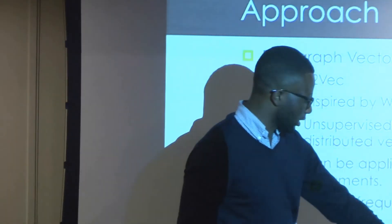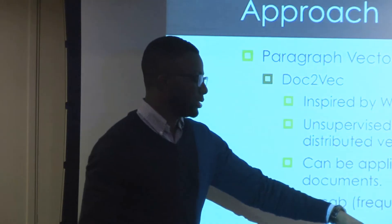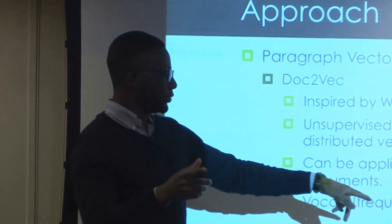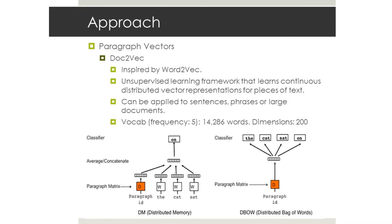The next one is distributed bag of words, which is more similar to the skip-gram model for Word2Vec. What you do is take your paragraph ID, initialize a random vector, then sample random sets of words and try to predict one word in that sample. It's effectively the exact reverse of the first approach.